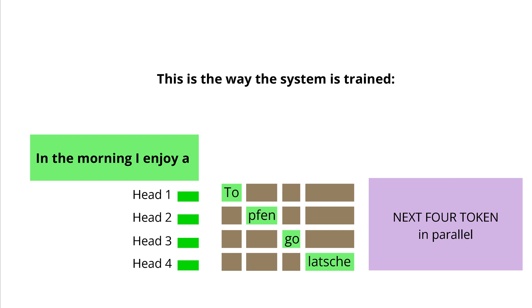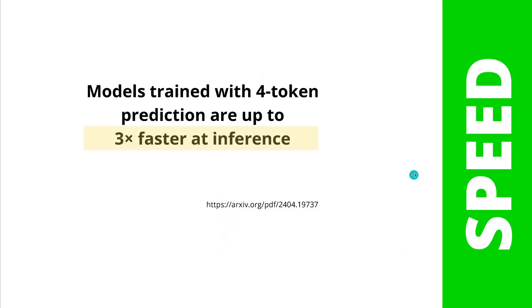You might ask: how is it possible that the heads know exactly what to do? Well, AI is just a pattern recognition system. This is exactly the way the system is trained, pre-trained, fine-tuned. This is the dataset you give to your new LLM with two or four heads. The system learns this behavior and does nothing else — it replicates during the inference run. The beauty here is that because we have parallelization, if we use four token prediction mechanisms on our transformer architecture, it is three times faster at inference. So we have superior speed with this.